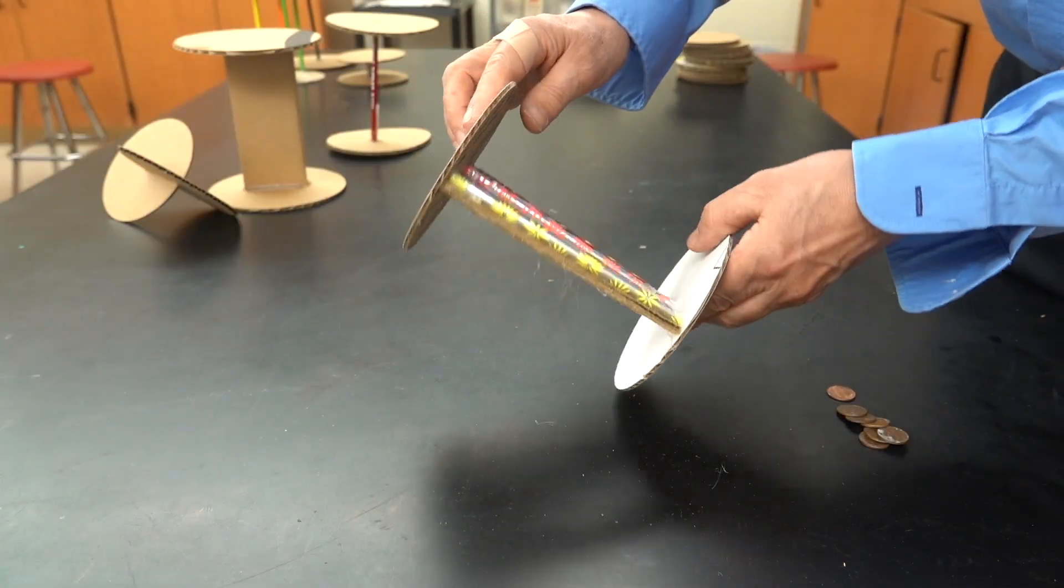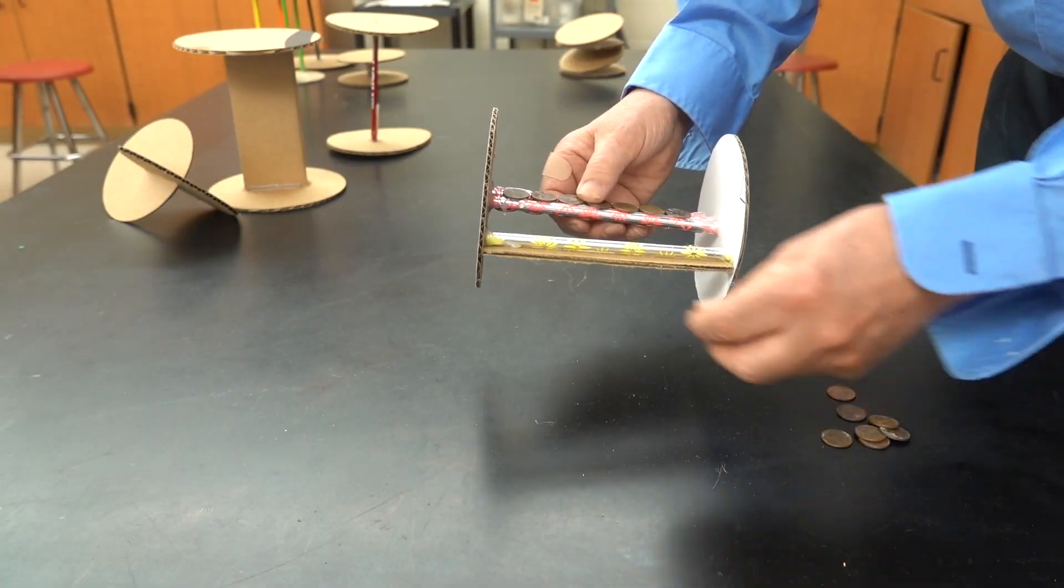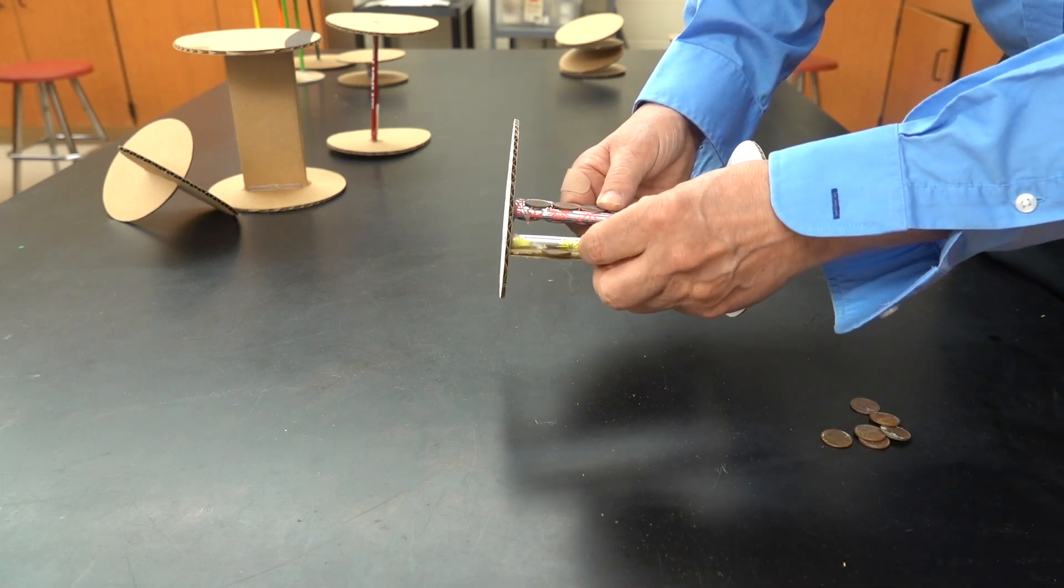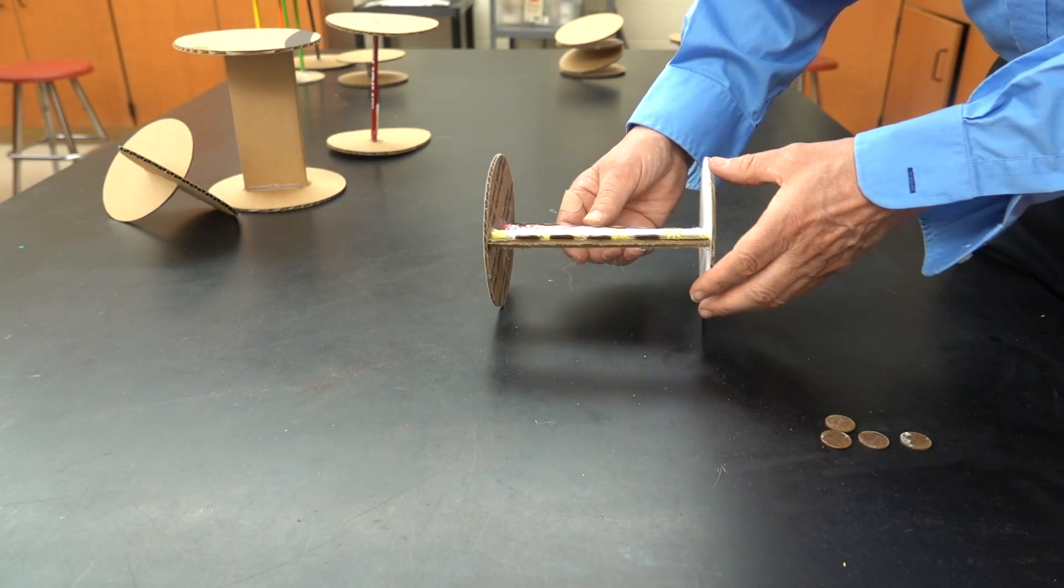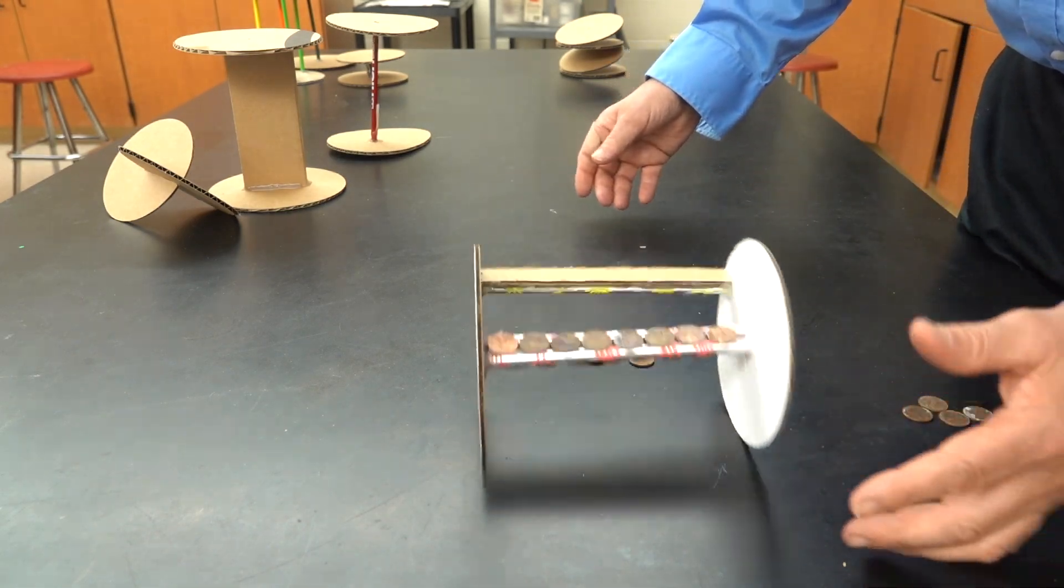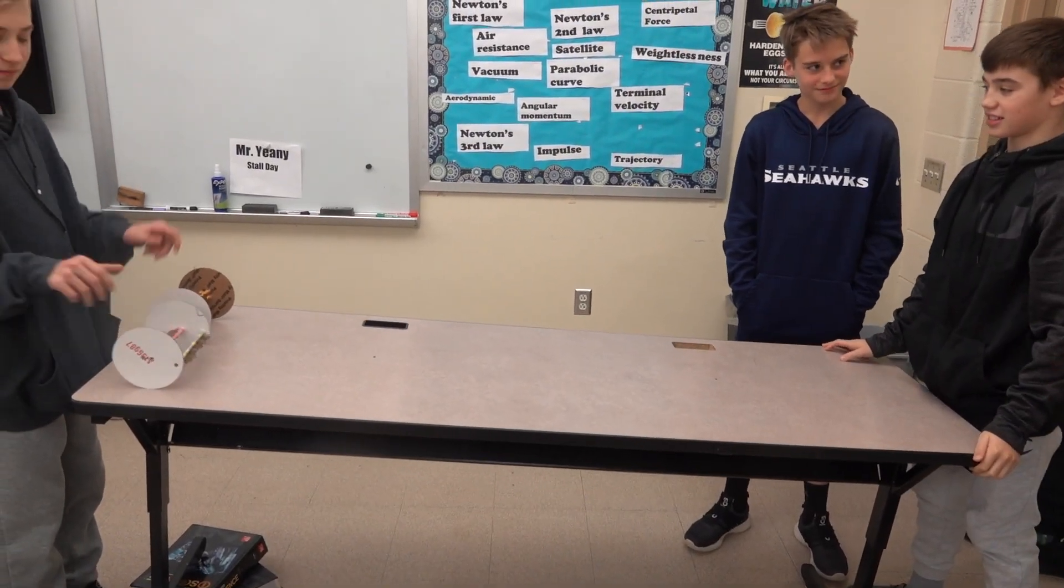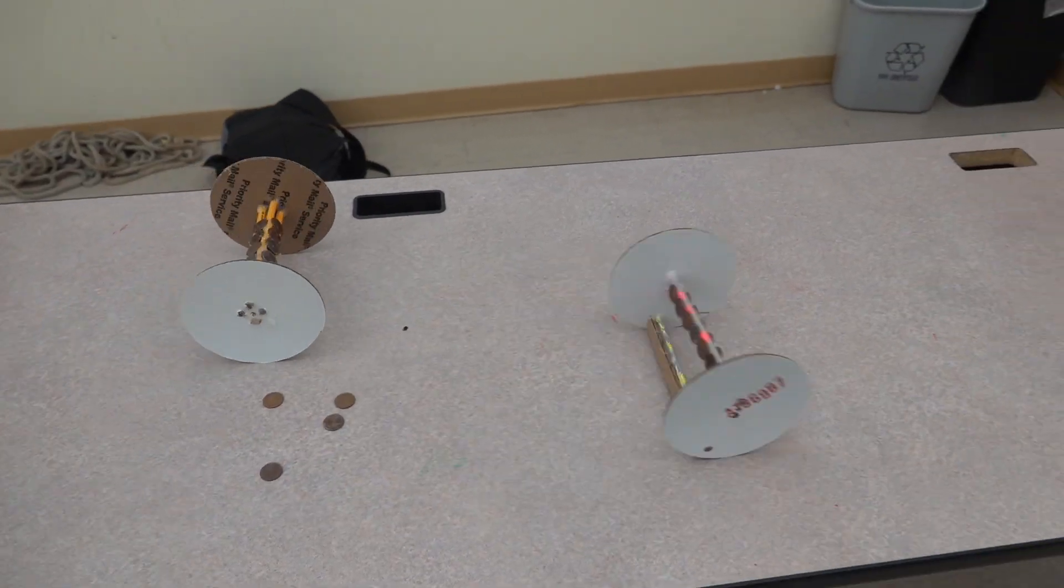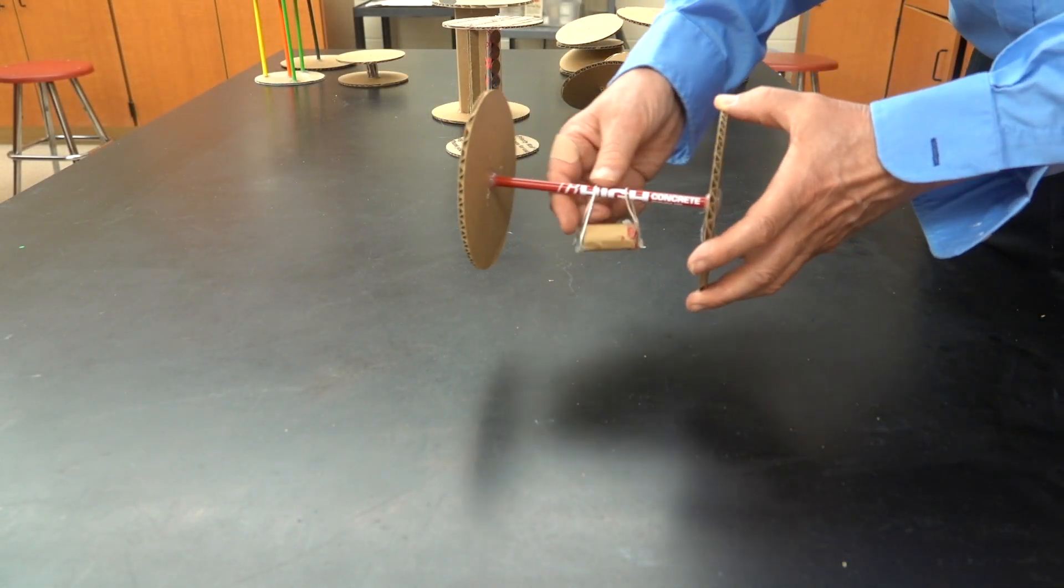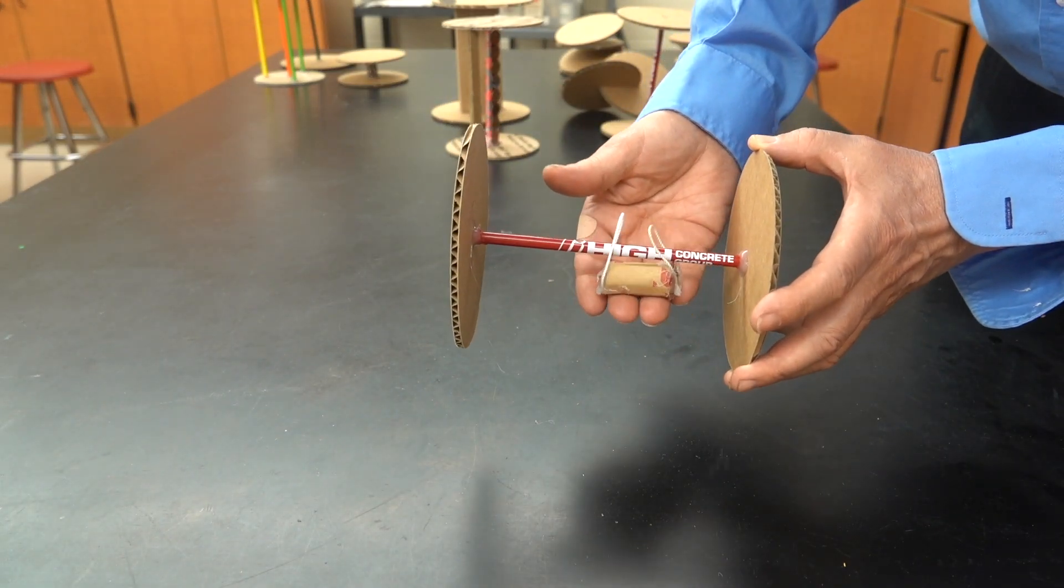This student added a shelf to the wheels. The pennies would sit on it, give the wheels an extra push, and then once it was done, they would fall off. This was actually the fastest project. Students also came up with a number of ideas to make the wheels move as slowly as possible.